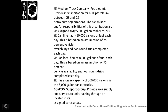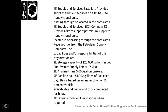The medium truck company provides transportation for general support petroleum organizations. Capabilities include 45 5,000-gallon tank trucks with a capacity to haul 155,000 gallons of fuel per day, based on 75% vehicle availability and two round trips per day, capable of holding up to 900,000 gallons of fuel per day on four round trips. Storage capacity is 300,000 gallons using 5,000-gallon tanker trucks.